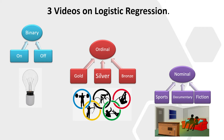Previously I covered binary logistic regression and the binary fitted plot and covered some of the basics, so if you haven't seen that video go back and have a look before we cover ordinal logistic regression. The difference between regular regression and logistic regression is that in logistic regression the response variable is categorical, whereas in normal regression we have a continuous variable as the response.